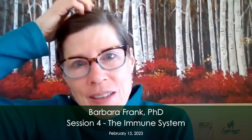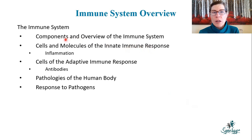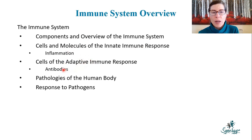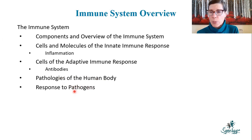With that said, Lane's immune system is ramped up right now — she's got inflammation going. So today we're going to be talking about the components and an overview of the immune system. There are a couple of branches: the innate immune system and the adaptive immune response, including antibodies. We'll also talk about pathologies of the human body and how your body responds to pathogens.